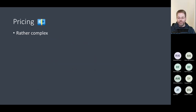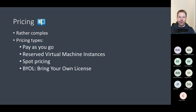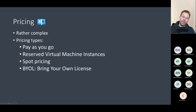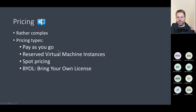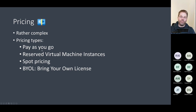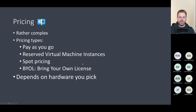Now, pricing — everything comes down to price. Firms have to compete in the market, and pricing is unfortunately rather complex, because there are different price types you can pick from for VMs. Basically the easiest and most standard one is pay-as-you-go. There is also something called reserved virtual machine instances. You can pick spot prices and bring-your-own-license.